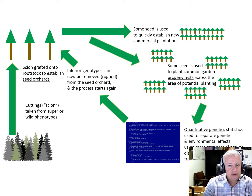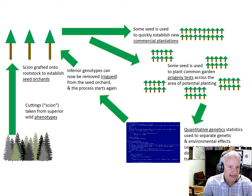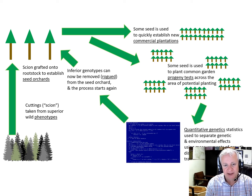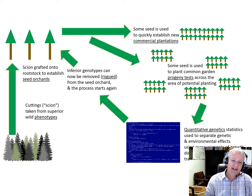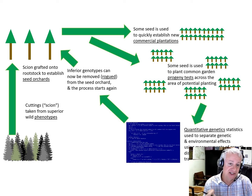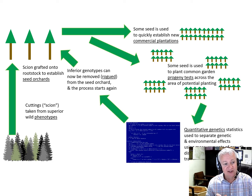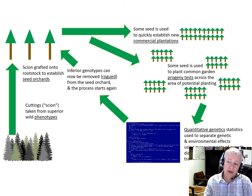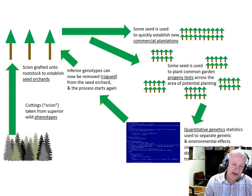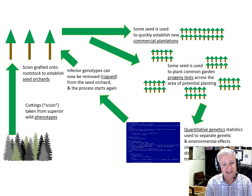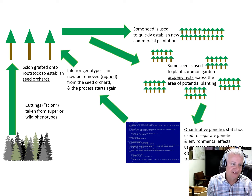We've covered the traditional tree breeding sequence in the previous section. While certainly the outlines of this are probably the most common sequence for tree breeding, especially in commercially important tree species, there are many modifications to this sequence and also alternative pathways to achieving tree breeding and tree improvement. I want to cover some of those modifications or alternative pathways in this section.